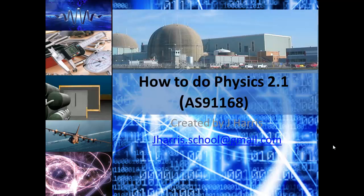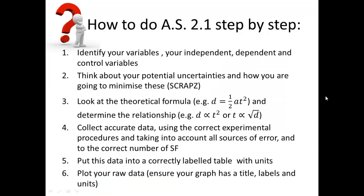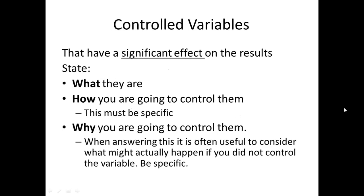How to do achievement standard 2.1 for physics, step-by-step instructions. You can pause, fast-forward, rewind, and change the speed. Step number one: Identify your variables - independent, dependent, and controlled. The independent is the one that you change, dependent is the one that you measure, and controlled are the ones that you keep the same. You have to figure out which controlled variables are significant.